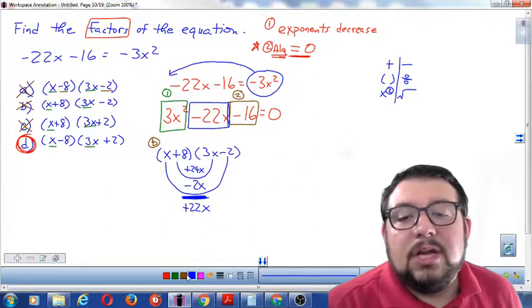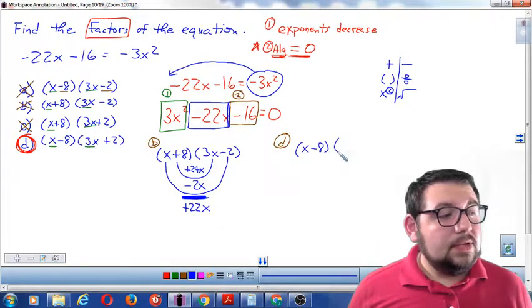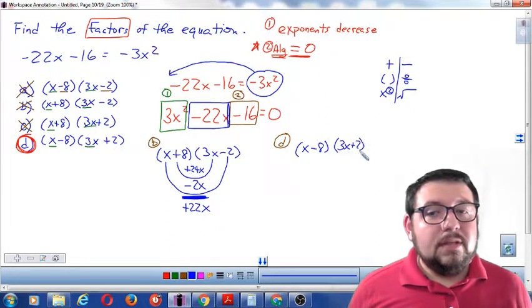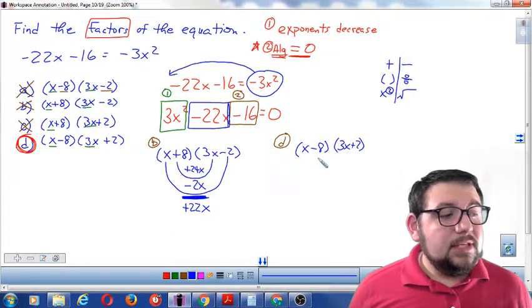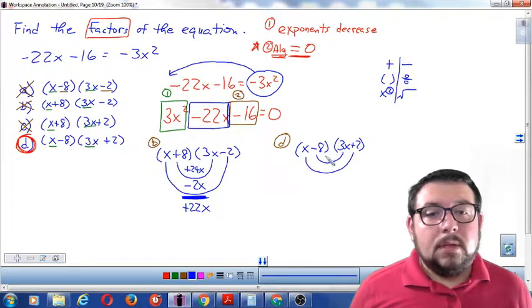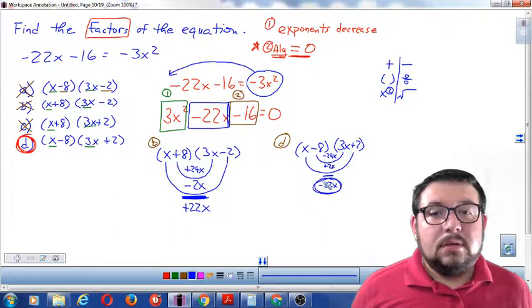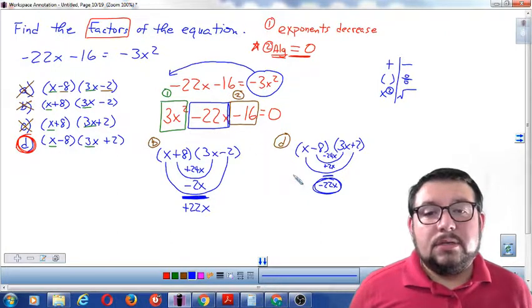Now someone might say, why don't we check D? Let's check it. x minus 8 and 3x plus 2. I'm going to draw another smile here. That gives negative 24x and positive 2x. When I combine them they make negative 22x, which is a perfect match to this term up here.